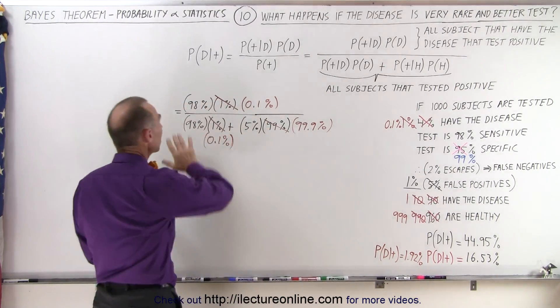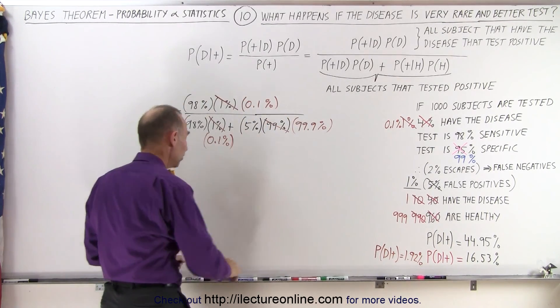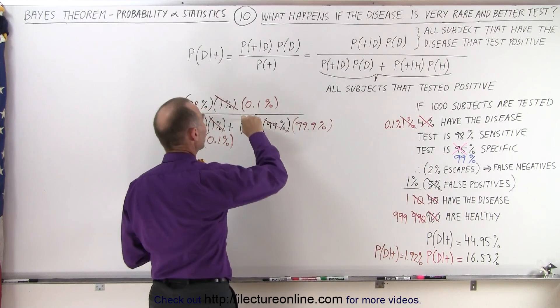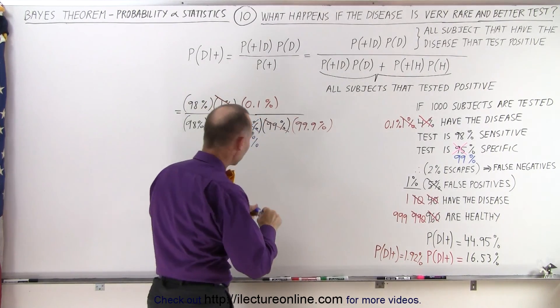So what changes in the equation now? Well here's the five percent. Instead of five percent here, this now changes to just one percent. That's the only change. Everything else stays the same.